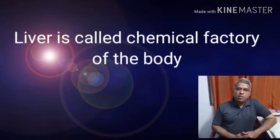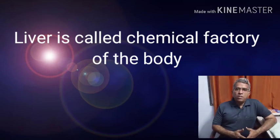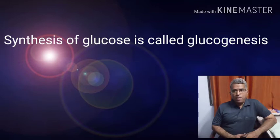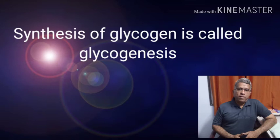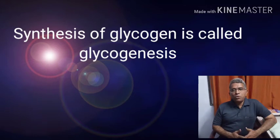Liver performs glucogenesis, which is the production of glucose. It also performs glycogenesis, which is the synthesis of glycogen. It also performs glycogenolysis, where glycogen is gradually broken down to glucose.